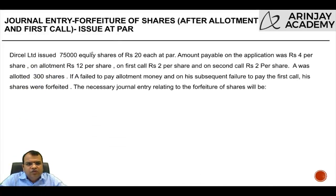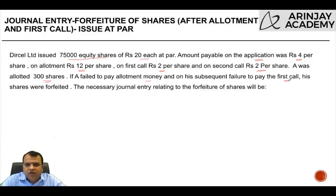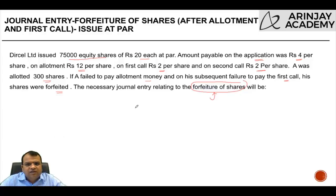Dursil Limited issued 75,000 equity shares of rupees 20 each at par. Amount payable on application was rupees 4 per share, on allotment rupees 12 per share, on first call rupees 2 per share, and on second call rupees 2 per share. A was allotted 300 shares. If A failed to pay allotment money and in his subsequent failure to pay the first call, his shares were forfeited. The necessary journal entry relating to the forfeiture of shares will be as follows.